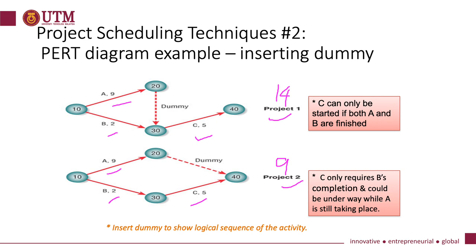The dummy in project 1 is necessary because it indicates a crucial precedence relationship. On the other hand, the dummy in project 2 is not required. Therefore, activity A could have been drawn directly from node 10 to node 40, and event 20 may be eliminated completely. Now, can you draw the revised PERT diagram for project 2?